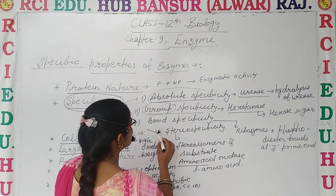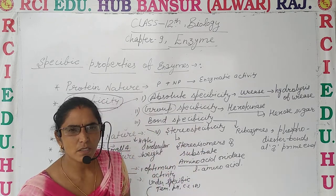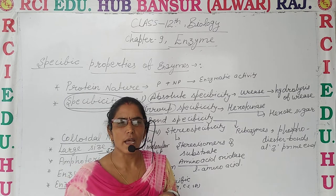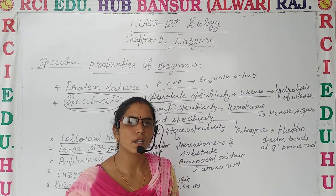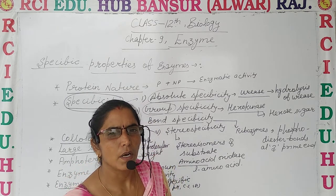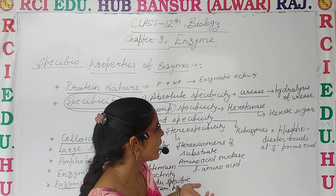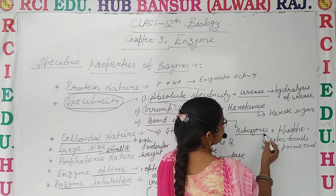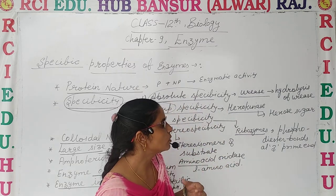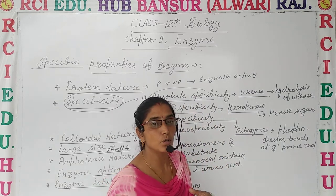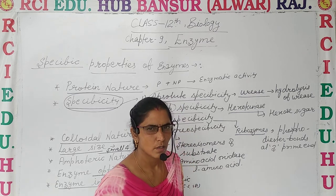The third property is bond specificity. It means some enzymes can identify particular bonds and can catalyze only at a particular bonding site. For example, ribonucleases — they carry out the hydrolysis of phosphodiester bonds.